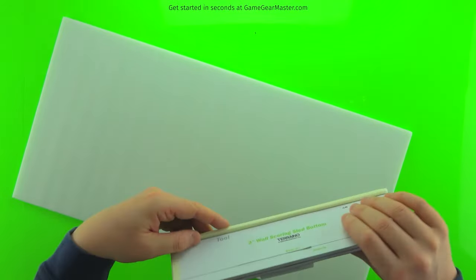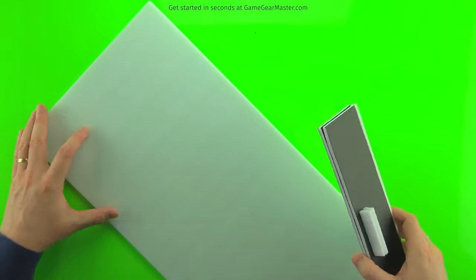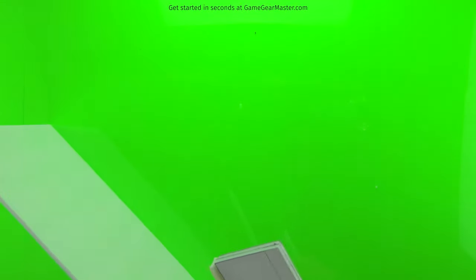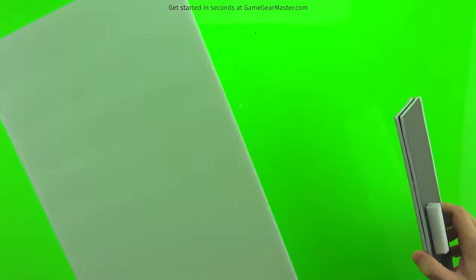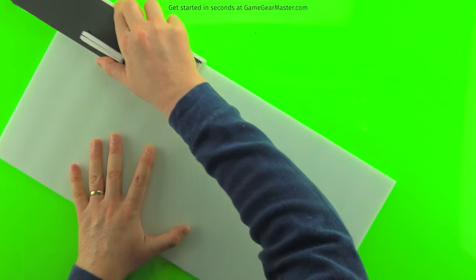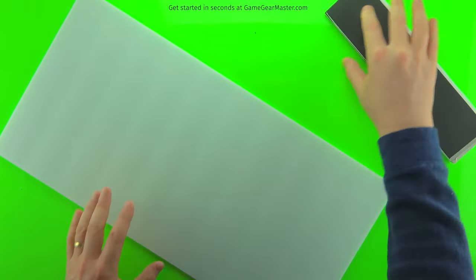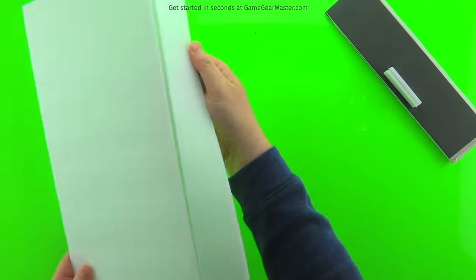And then we'll use our two inch wall scoring sled to cut out some strips from the foam board. Now you want to kind of choose an edge that's nice and smooth. Sometimes they're a little rough. And we're going to cut one strip out first and then we're going to end up texturing the rest of the foam board left over.